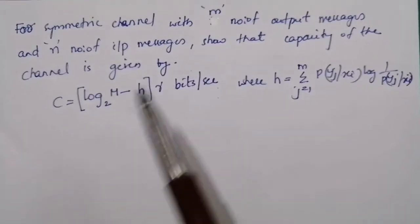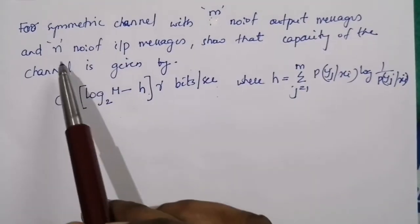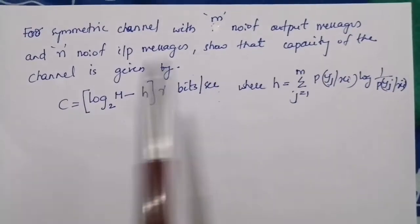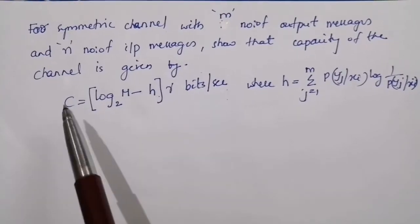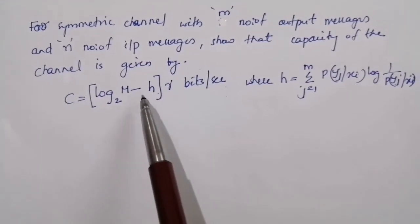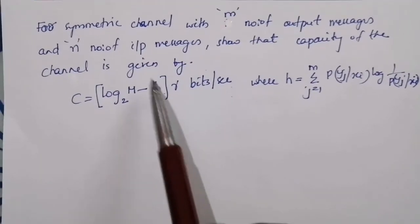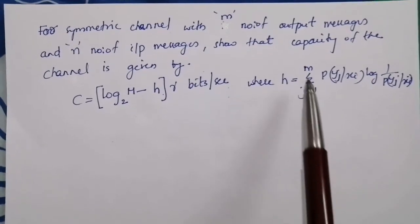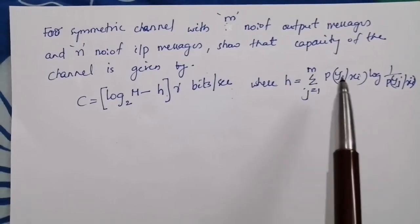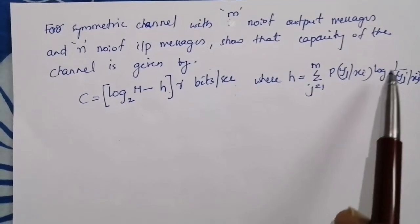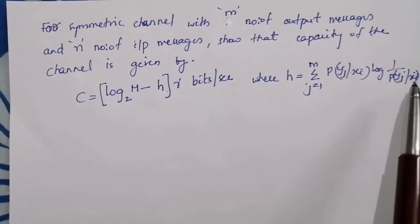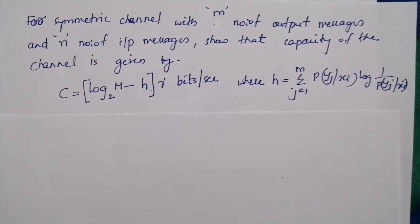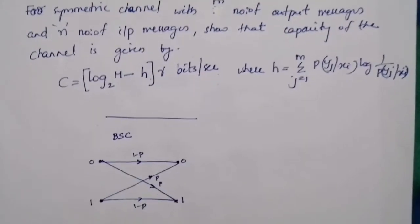For a symmetric channel with m output messages and n input messages, show that capacity of the channel is given by C equal to log2(m) minus h, times r bits per second, where h equals sigma j=1 to m of p(yj|xi) log[1/p(yj|xi)]. Before going to this proof, we will consider a binary symmetric channel.